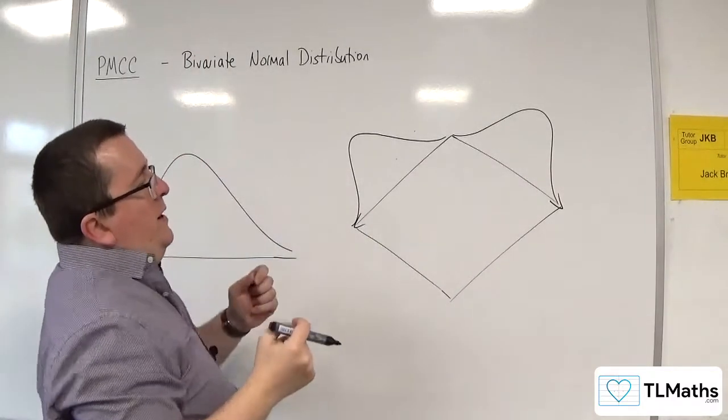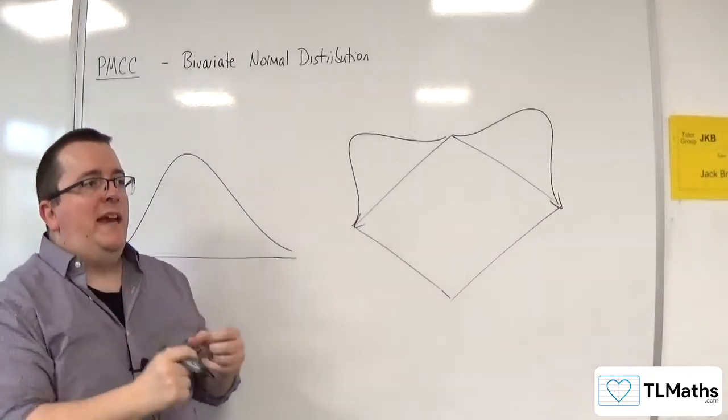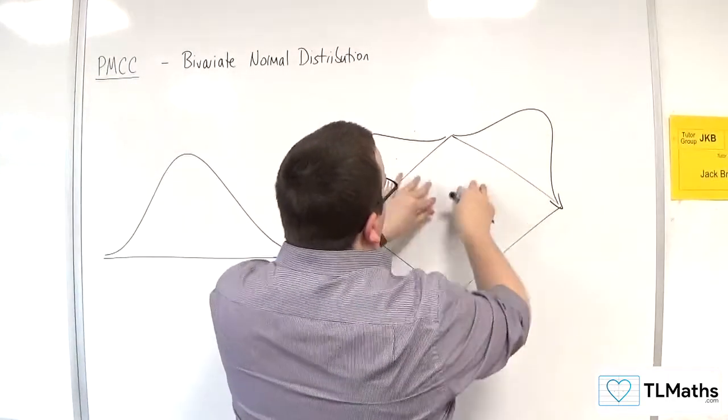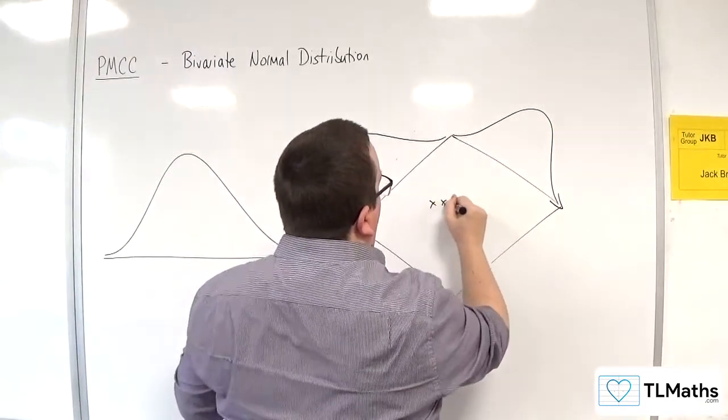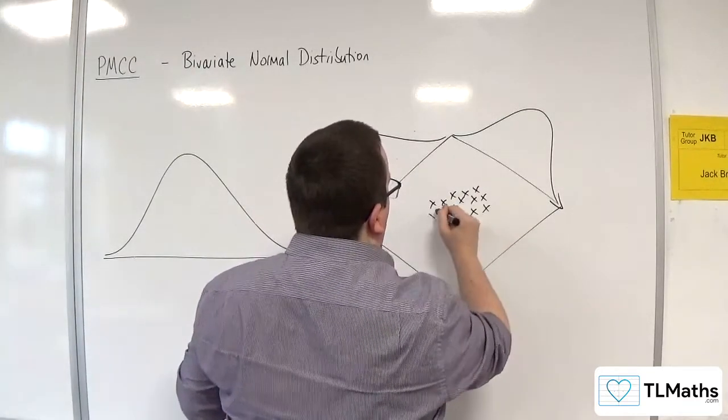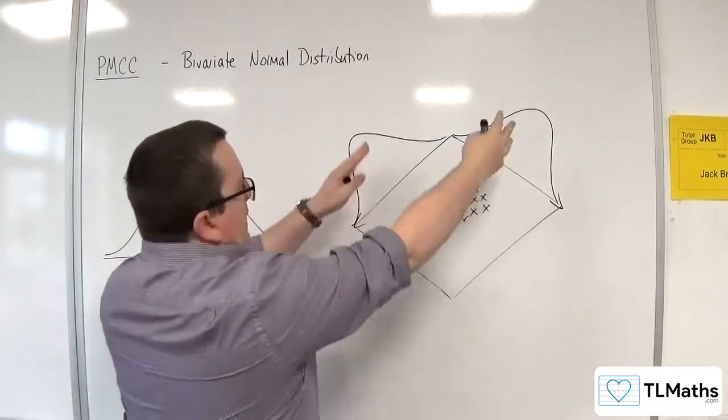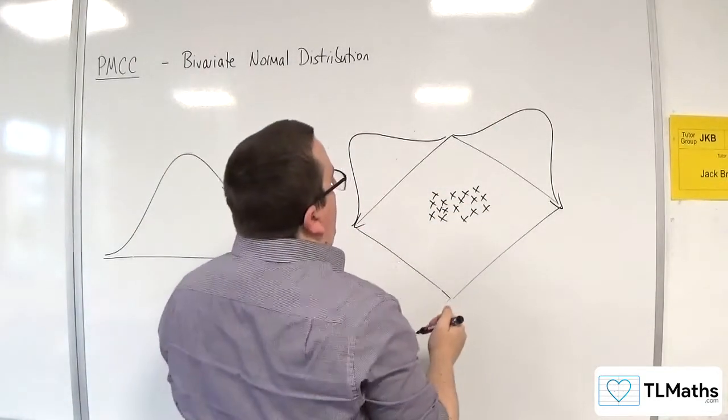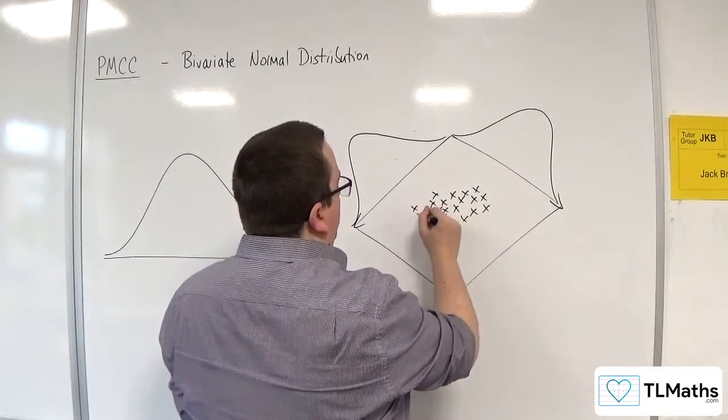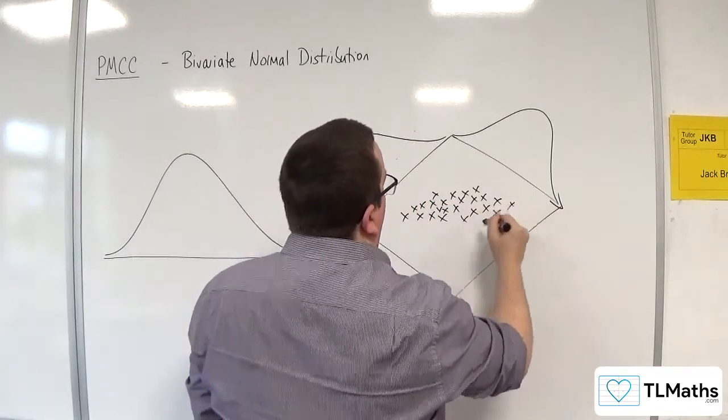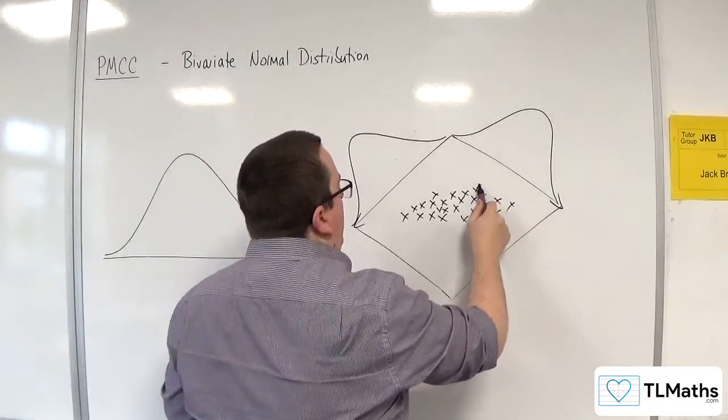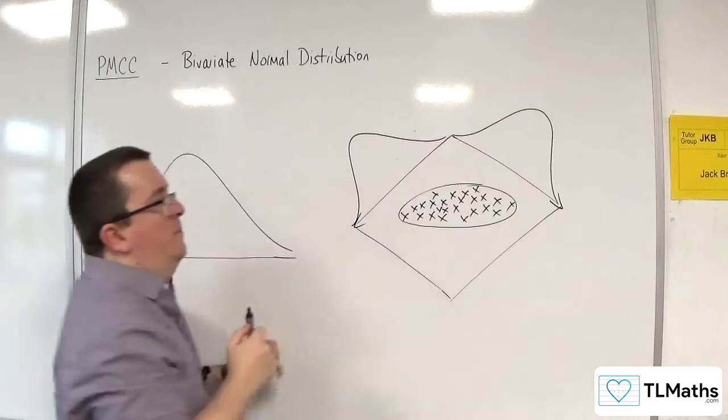So when we think about where the data would be on your scatter graph, then you would expect the majority to be somewhere in the middle, because that is where the majority of the data is in your normal distribution. You will also have a few, some more towards the tails. And consequently, this is where you get your elliptical shape.